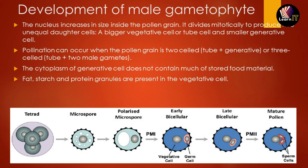Pollination can occur when the pollen grain is at the two-celled stage — i.e., tube cell and generative cell — or at the three-celled stage, when the generative cell has divided into two male gametes. So pollination can happen in either of these stages.